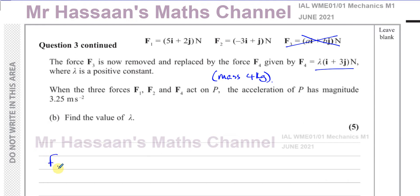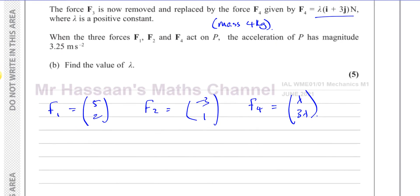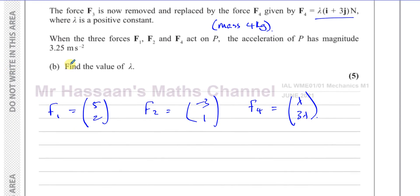So we now have F1, F2 and F4. F3 is now replaced by this. So we have F1 is (5, 2), F2 is (-3, 1), and F4 is (lambda, 3 lambda). I like to write them as column vectors.